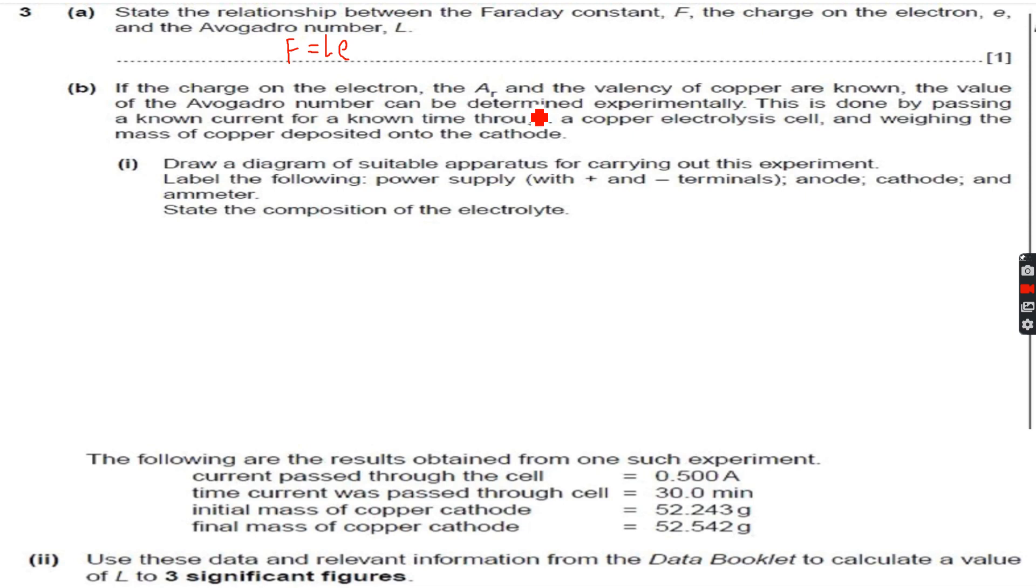If the charge on the electron, the atomic mass, and the valency of copper are known, the value of the Avogadro number can be determined experimentally. This is done by passing a known current for a known time through a copper electrolysis cell and weighing the mass of copper deposited onto the cathode. Draw a labeled diagram of suitable apparatus for carrying out this experiment. Label the power supply with plus and minus, anode, cathode, and ammeter. State the composition of the electrolyte.